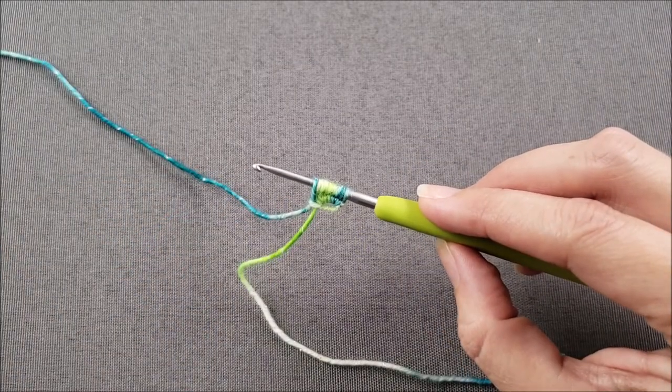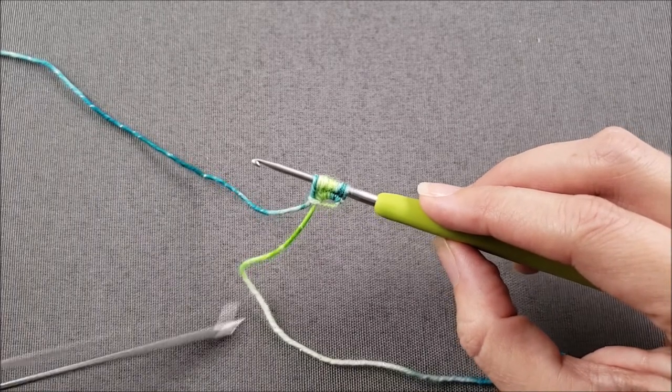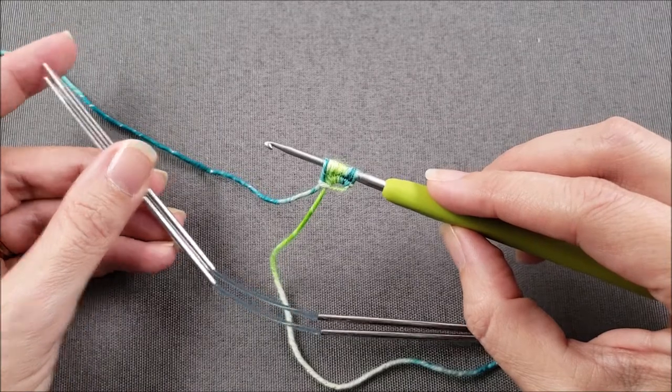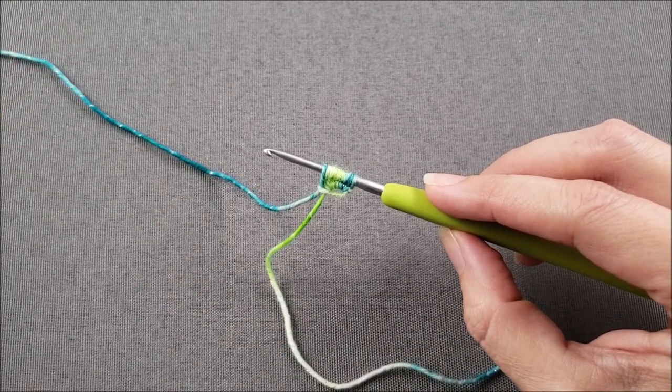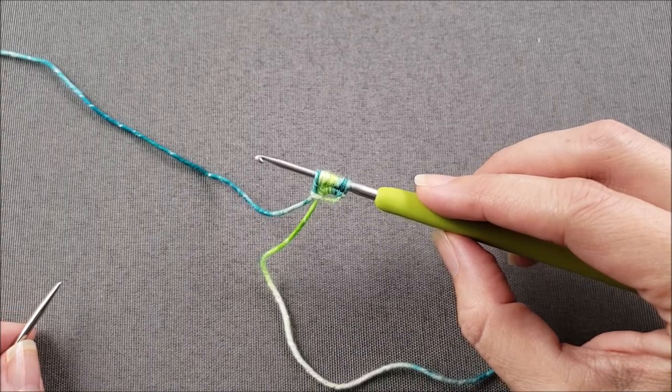Now it's time for us to transfer our stitches from the crochet hook onto knitting needles. I'm using my Addi flexi flips today but you can use regular double pointed needles or even long circular needles if you prefer knitting using the magic loop method.